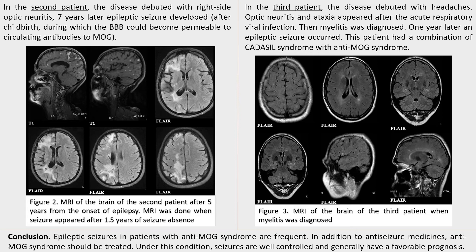In the second case, the disease debuted with right-side optic neuritis. Seven years later, epileptic seizures developed after childbirth, during which the blood-brain barrier could become permeable to circulating antibodies to MOG. In figure 2, you can see the MRI of the brain of the second patient after 5 years from the onset of epilepsy. The MRI was done when seizures appeared after 1.5 years of seizure absence.